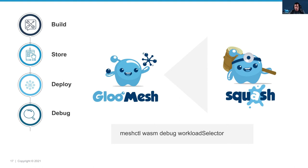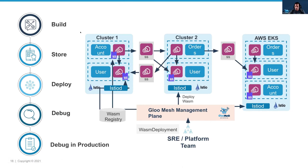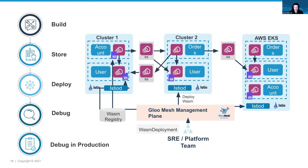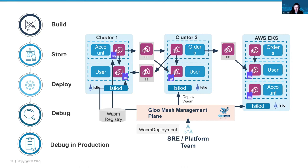Thanks Yuval. Attaching a debugger is incredibly powerful and it's one of the most requested features from users working with wasm filters — we're really happy to be working on that. But most of the time when you're working in an environment it's not a single mesh, single cluster, single service environment that's easy to attach a single debugger to. It usually looks something a little more like this — multiple clusters, load balancers, databases, all kinds of different infrastructure. Let's look at a few tools we have to help you debug and troubleshoot in production that are more suited to use at scale.